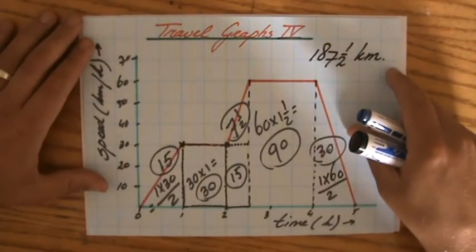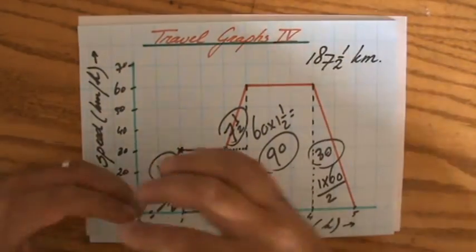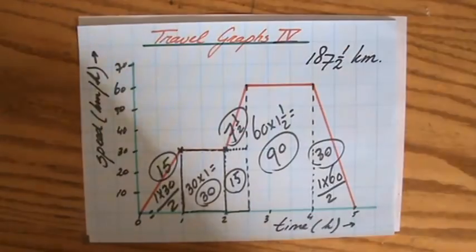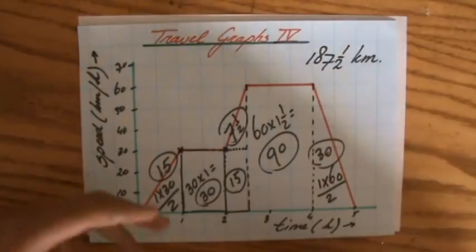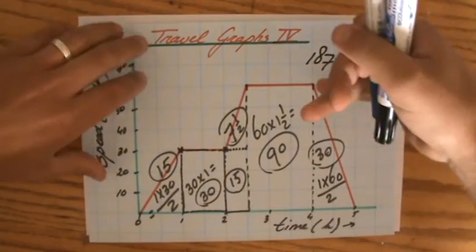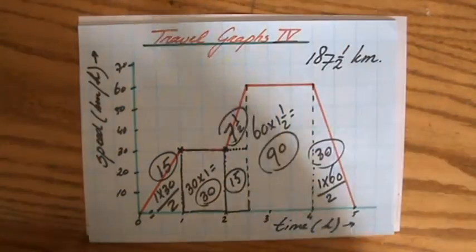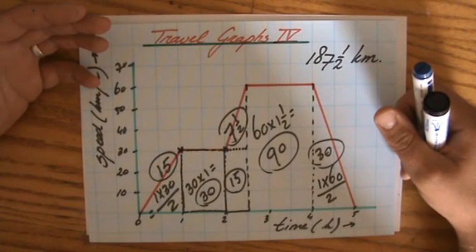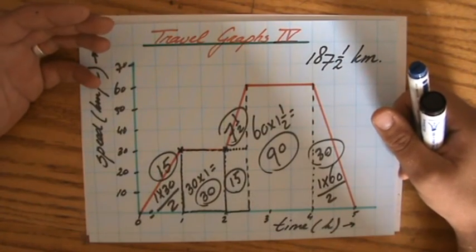Travel graphs, guys. We have spoken about distance time graphs, speed time graphs, acceleration, constant speeds, turning around, going back home, deceleration. We've spoken about so many things, and all of it is important and very useful in your lives.